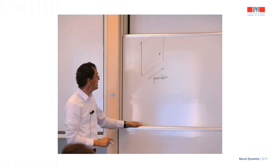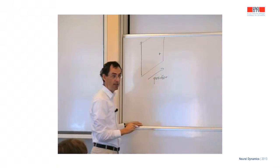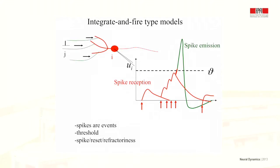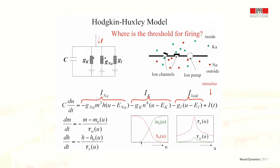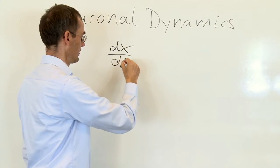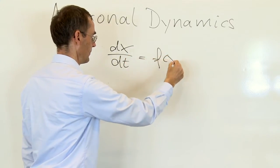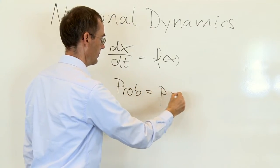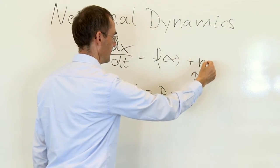My name is Wolf Gerstner. I will be the instructor for this class and I am a professor here at EPFL. I have taught a class similar to this one several times already to EPFL students in the classroom that you see here. I will use slides for teaching, but I will occasionally switch to the whiteboard in order to write down mathematical formulas like differential equations or probabilities. And sometimes I combine stochasticity with differential equations. These are the tools that we will need to describe the neuronal dynamics.